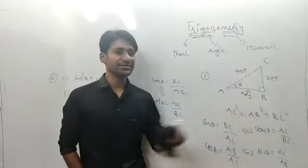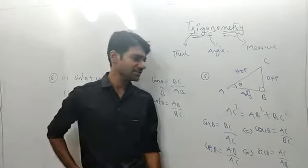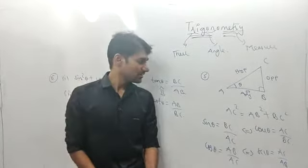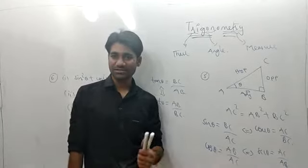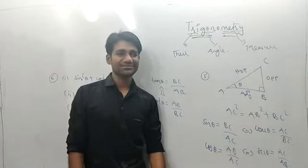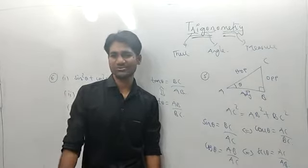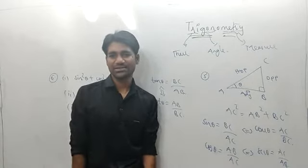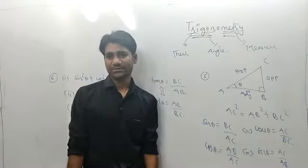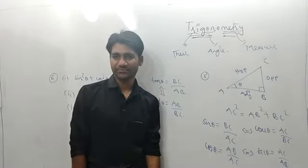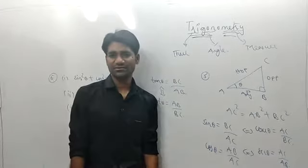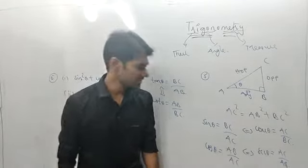In 10th standard we measured angles in degree scale. There are basically three scales: the degree scale, which we have been using for years; the grade or centigrade scale, which is an older system; and the radian scale, which is the most used scale and which we introduced in our board class.